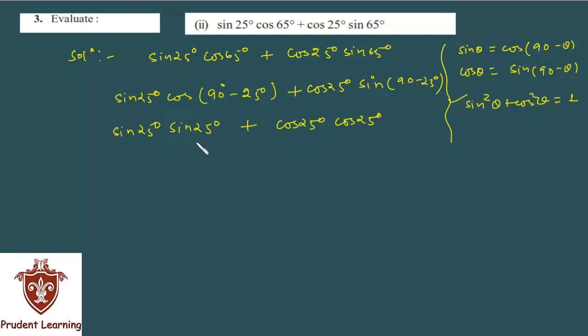Now look, both angles are same. You know, sin θ into sin θ is what? Sin² θ. Therefore, sin² 25 degree. Here, theta is 25. Plus of cos 25 into cos 25 is cos² 25 degree.